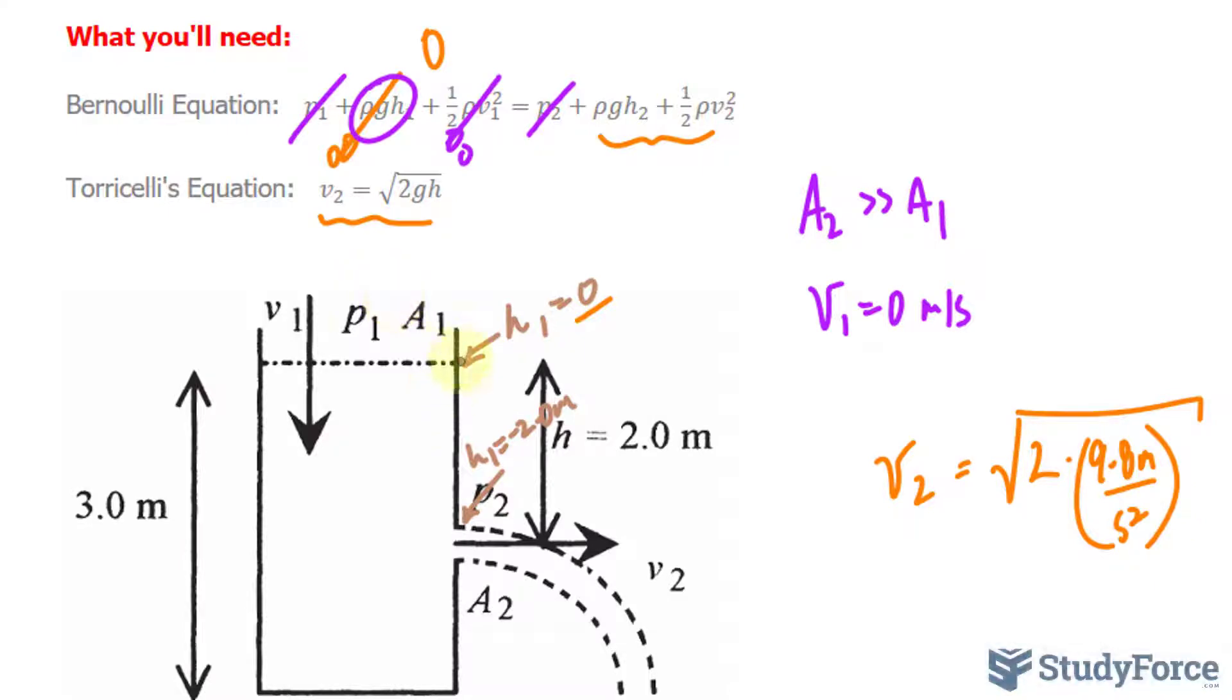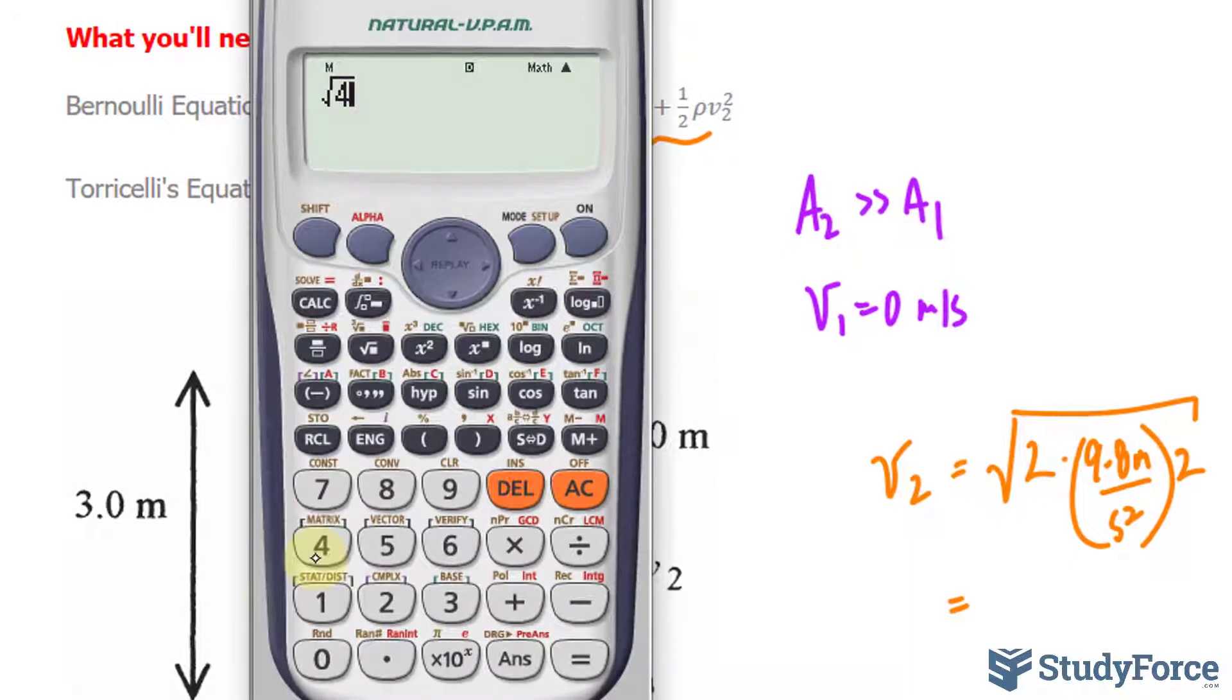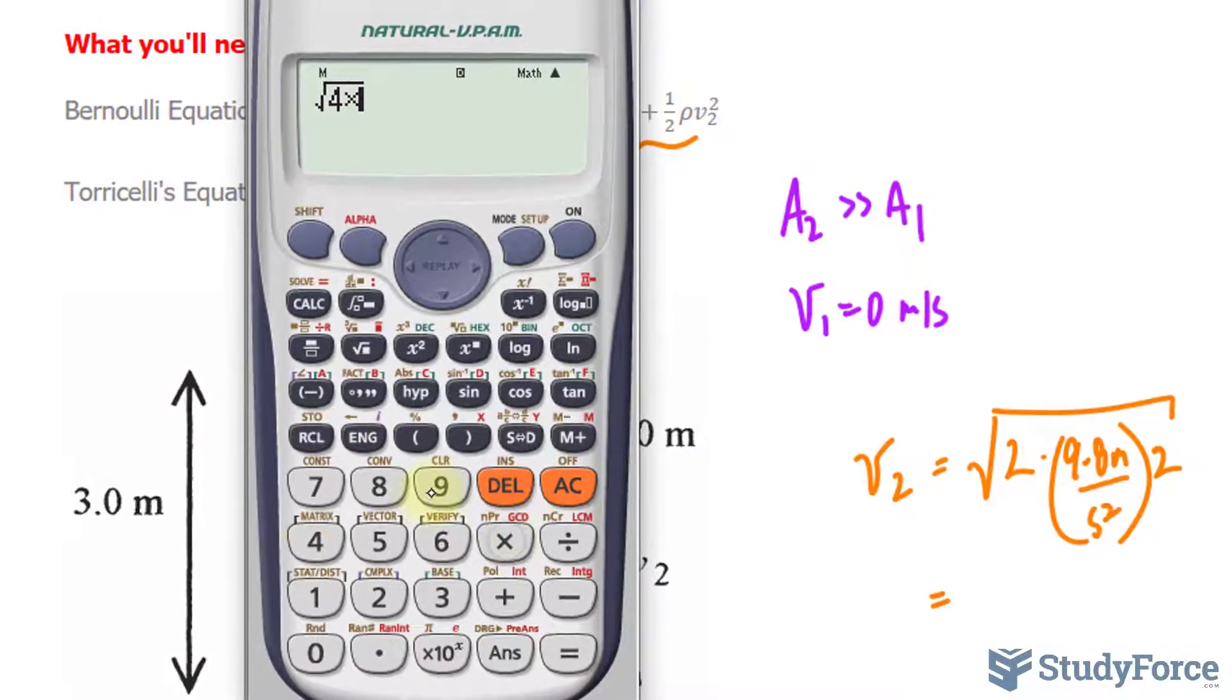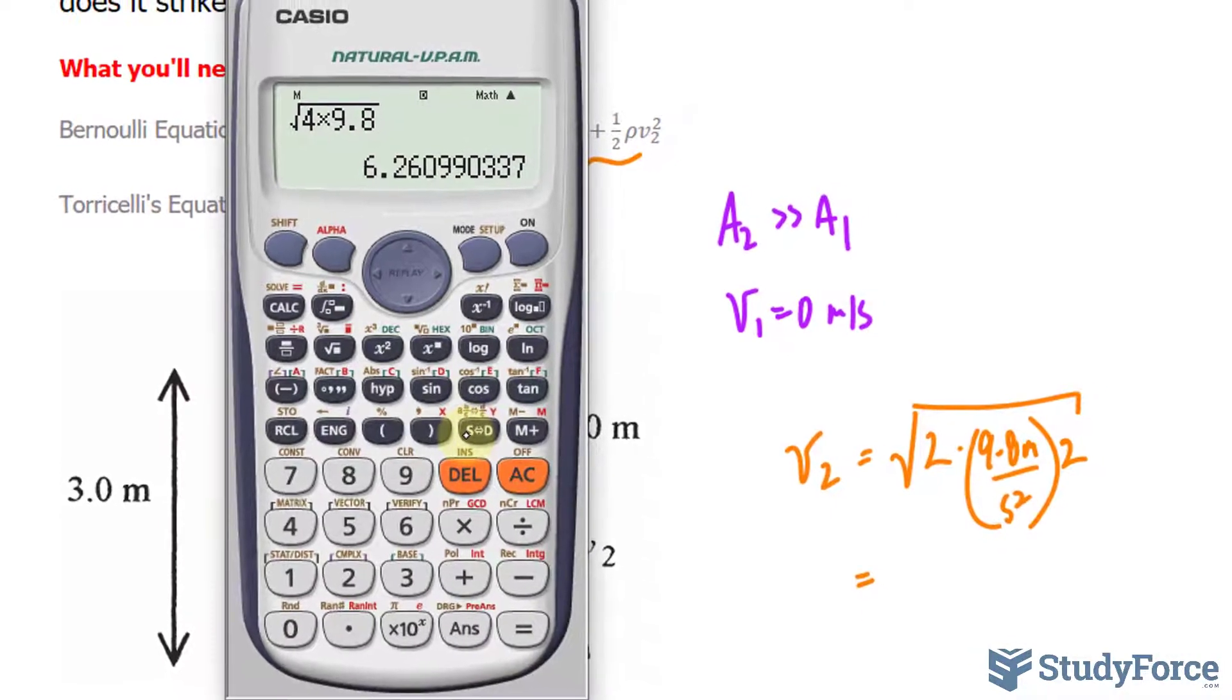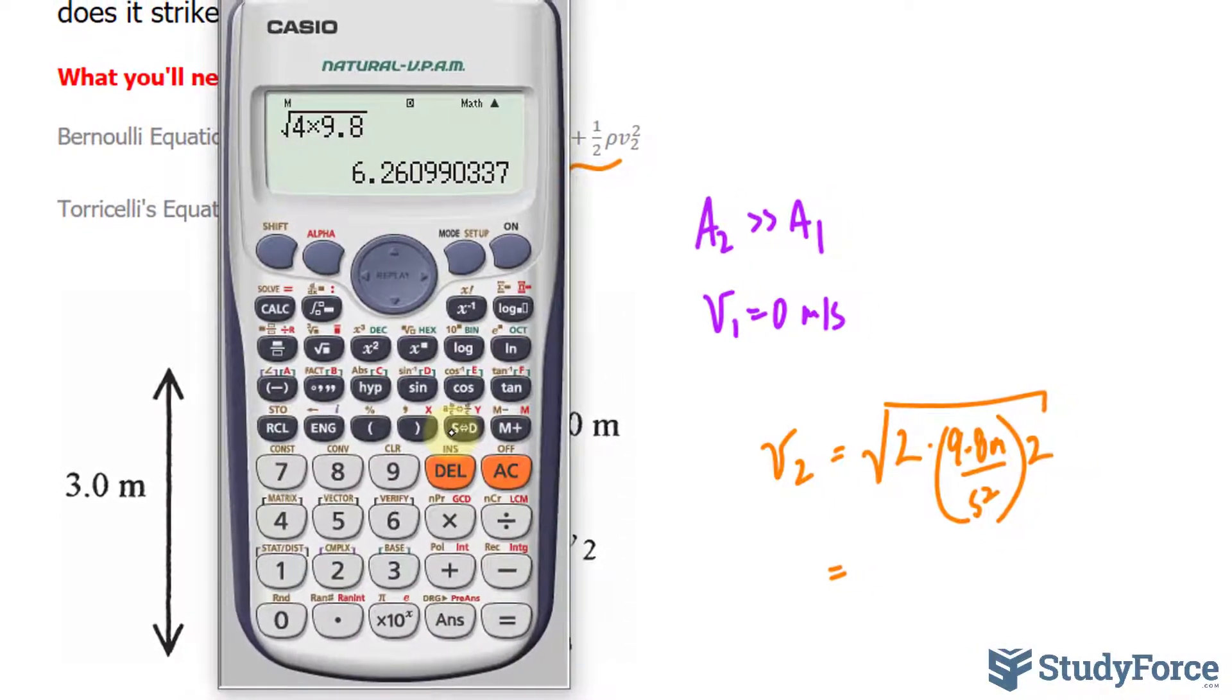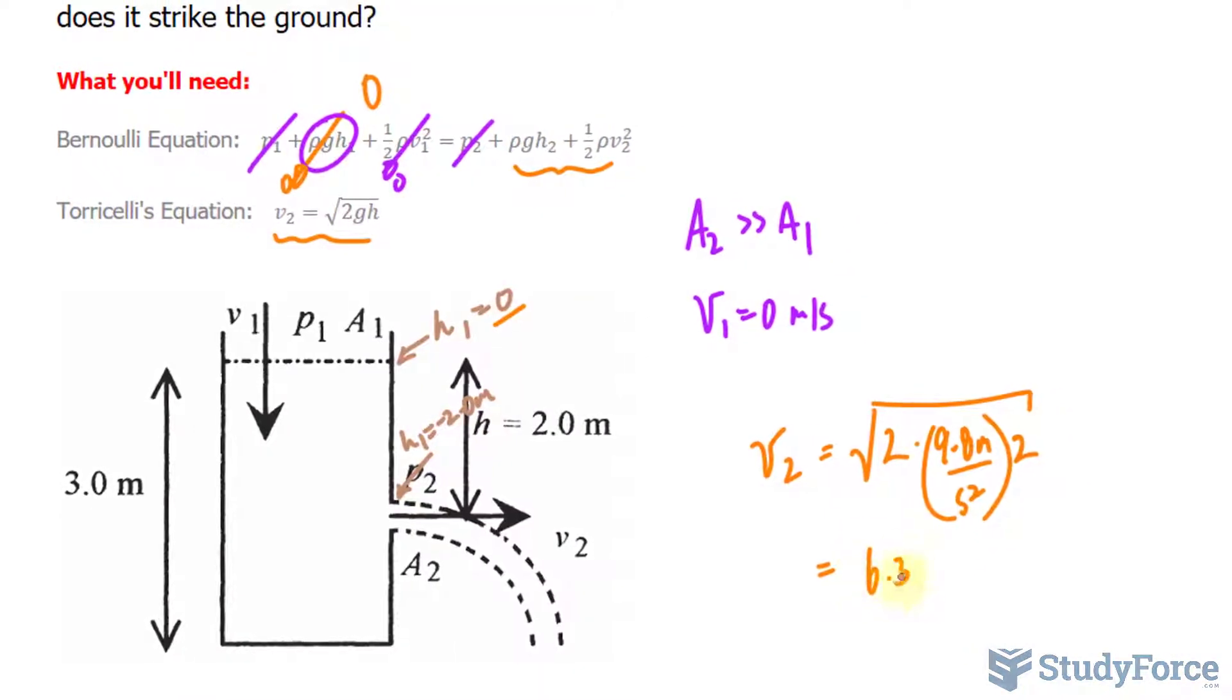The difference in height from the top to where the hole exists is 2 meters. So I'll multiply everything by 2. The square root of 4, since 2 times 2 is 4, times 9.8, equals roughly 6.3. So 6.3 meters per second is the speed at which the water exits this container.